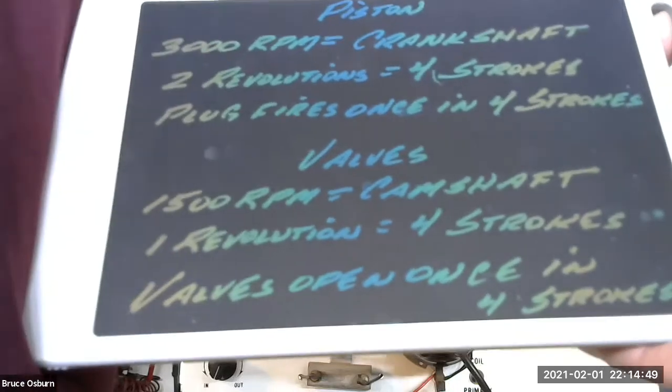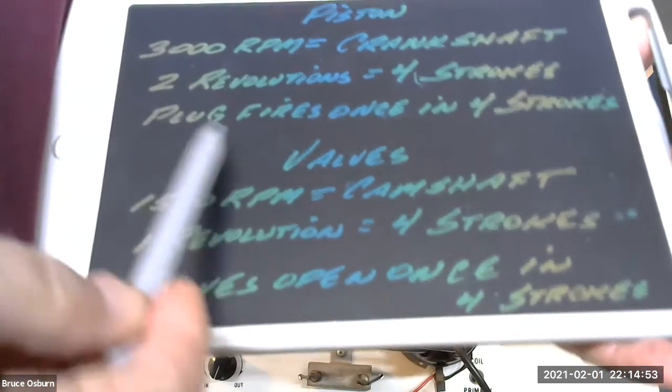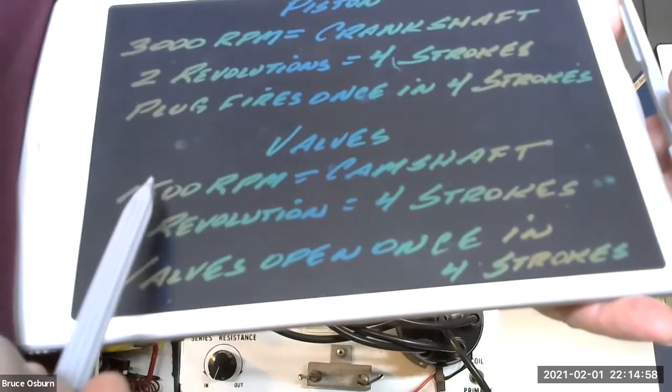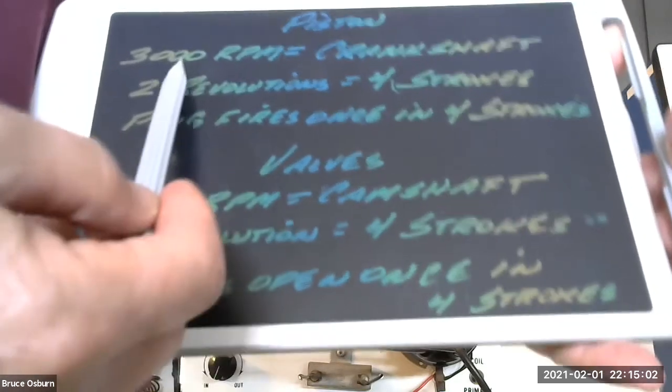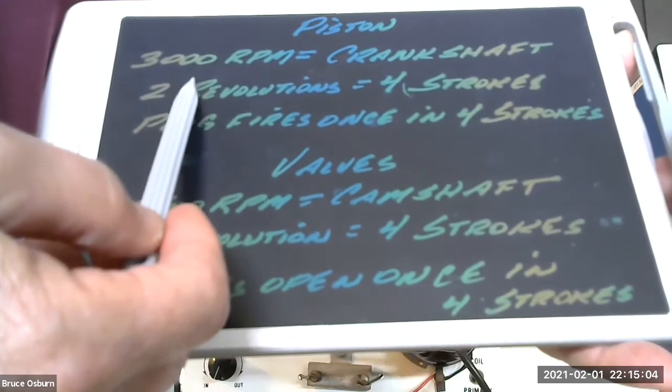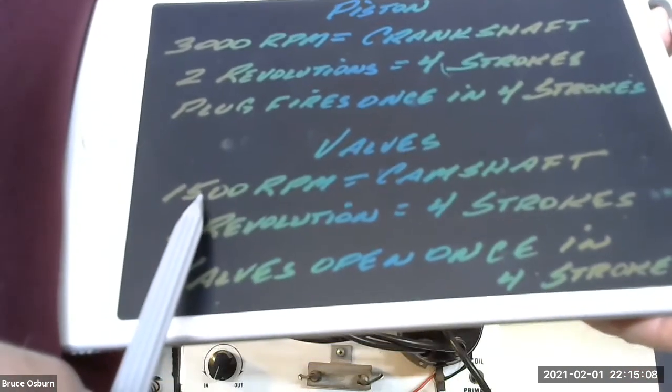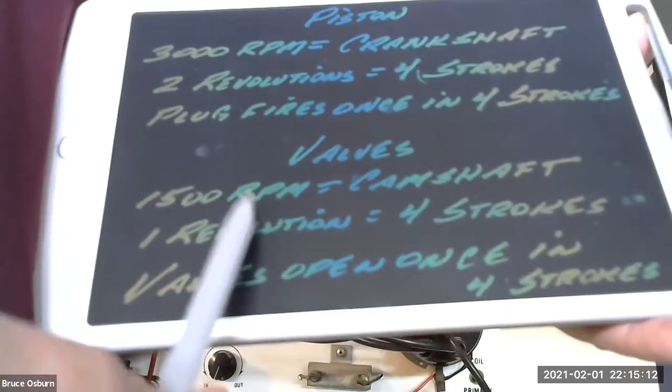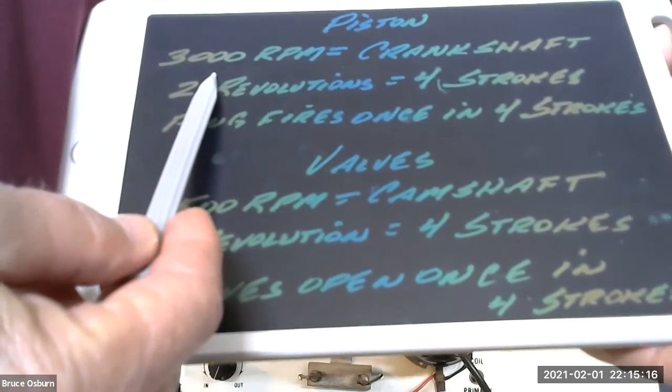In order to time the spark, if we connect the distributor or time the distributor with the valves, that works. Because the valves work on 1,500 revolutions per minute when the crankshaft is turning 3,000 revolutions per minute. So the camshaft turns 1,500 revolutions per minute when the car is driving at 3,000 RPMs of the engine.